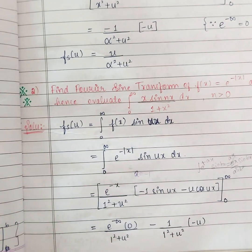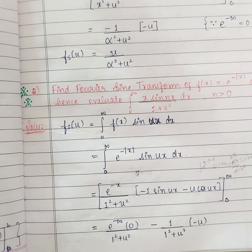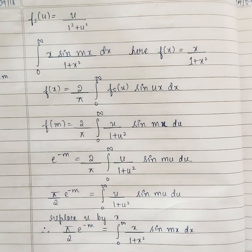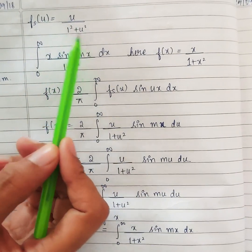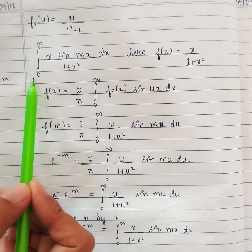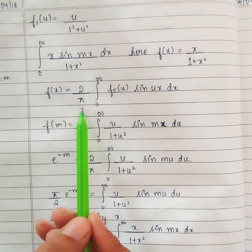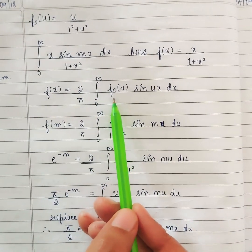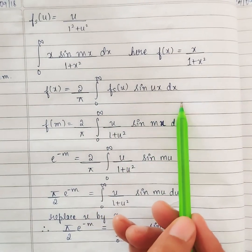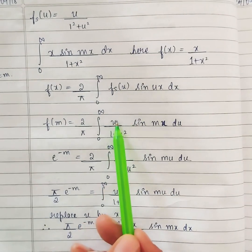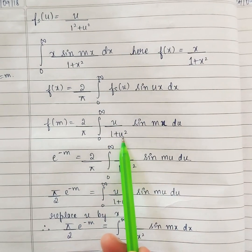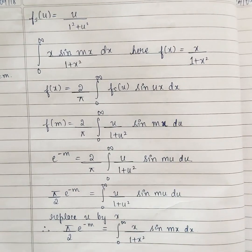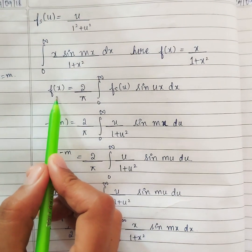To find the integral, always what we will do is use the inverse. But here we will not use simple inverse Fourier transform — we are going to use inverse Fourier sine transform. The value is u by 1 plus u square, and the formula is f of x equal to 2 by pi integral 0 to infinity Fourier sine transform — that is f of u sine ux du. So this is your answer: u by 1 plus u square, and then sine ux du.